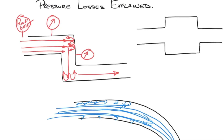This ends up being a pressure loss. The reason it's not called a flow loss is that if we don't give the flow another path to go, it has to get through the hose — it's going to continue going through anyway. All we see is that the effective pressure downstream becomes less.